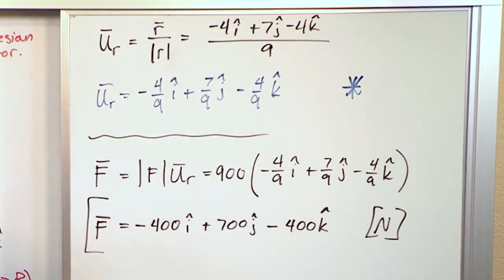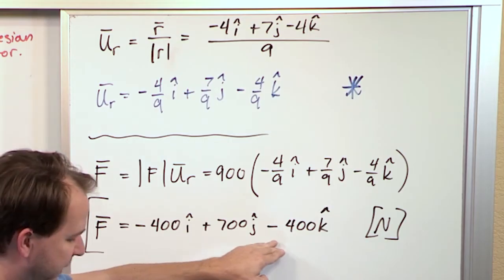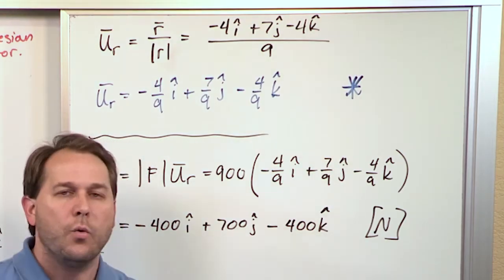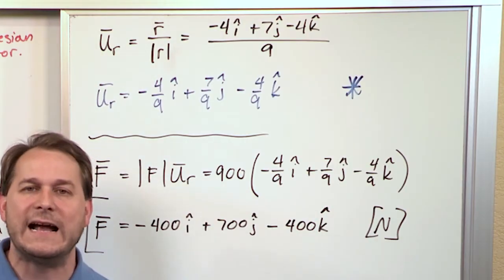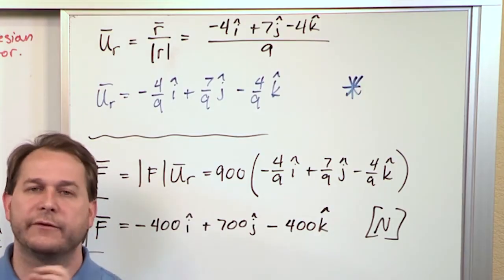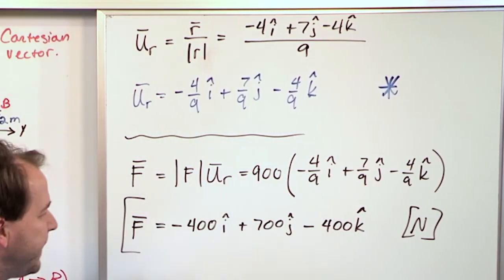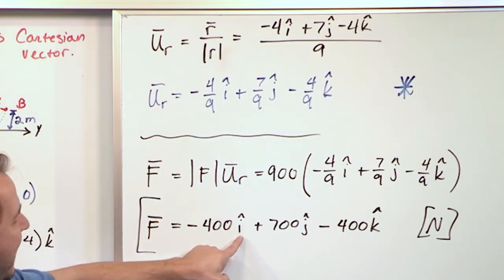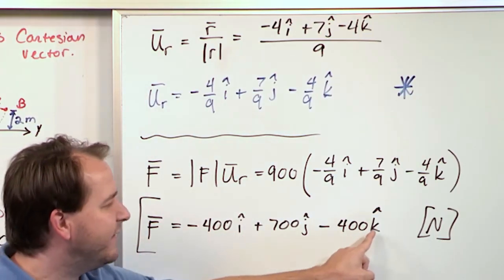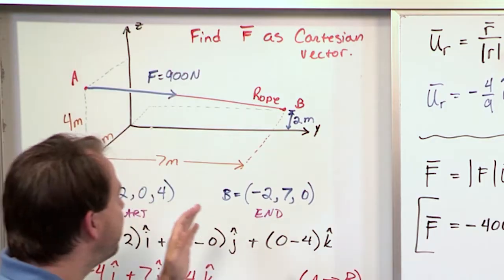It's the same old thing. So, what we have here is a force vector, negative 400 i plus 700 j minus 400 k. What this really means is I now have this force vector that I've drawn in a picture in terms of Cartesian vector. And what this means is this Cartesian vector has an x component, a y component, and a z component.